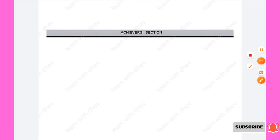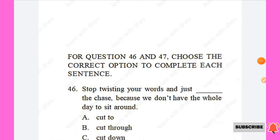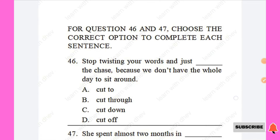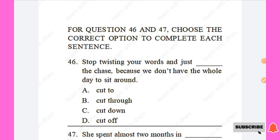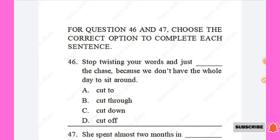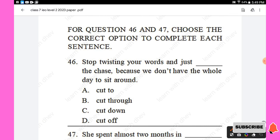The last section is the Achiever Section. For questions 46 and 47, choose the correct option to complete each sentence. Question 46: Stop twisting your words and just — the chase, because we don't have the whole day. Options are: cut to, cut through, cut down, cut off. The right answer is 'cut to' — cut to the chase. Option A is the right answer.